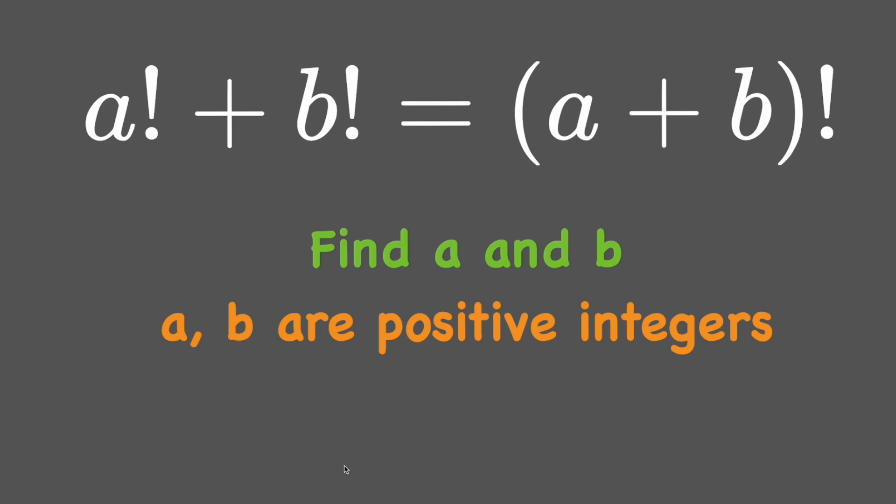Hi, welcome back. Today we are going to solve an arithmetic equation. a and b are positive integers, and we have to find a and b in this equation: a! + b! = (a+b)!